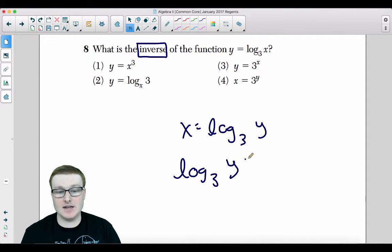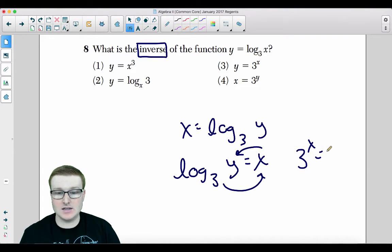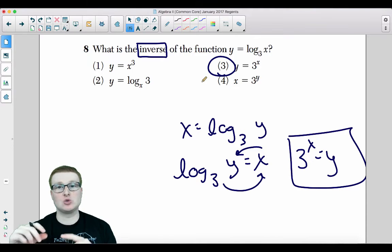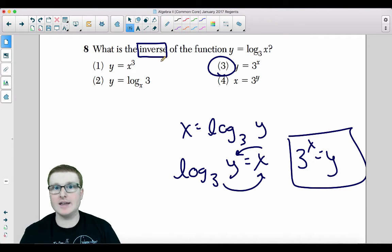Choice three is your answer. We need to switch the x and the y, solve for y. That's how you solve inverses. Switch the x and the y, solve for y. And we got it. Choice three is your answer.